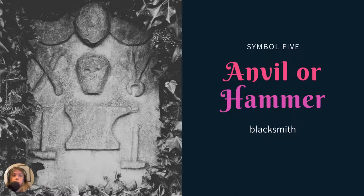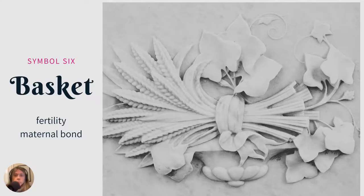Anvil or hammer — these types of symbols were popular more in medieval times. Here we have a skull surrounded by all the tools that a blacksmith would use. A basket is a symbol of fertility or a maternal bond. This example looks very Victorian — you can see the basket there at the bottom. The wheat has a significance, the IHV has a significance. It's all related to fertility, motherhood, and loyalty.